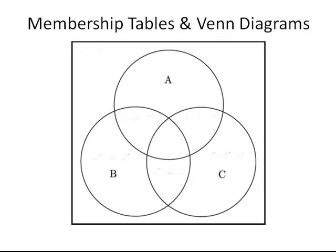Let's look first at the three subsets of the universal set. We have A, B and C — the rectangle indicates the universal set. We have the subset A, the subset B and the subset C. As you can see there are some intersection regions as well, which is important. Altogether there are eight regions and we are going to talk about each region individually.